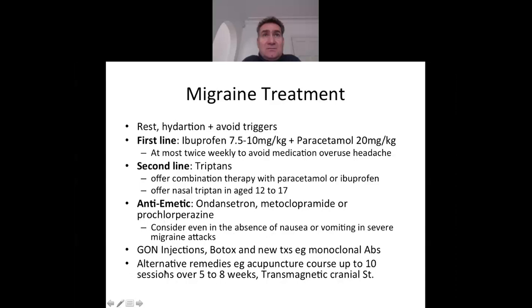Other less commonly used treatments include greater occipital nerve injections using a combination of steroid and lignocaine. Botox is not used in children as it involves 32 injections around the face and skull. New treatments include monoclonal antibodies. Alternative remedies include acupuncture, up to 10 sessions over five to eight weeks, and transcranial magnetic stimulation.